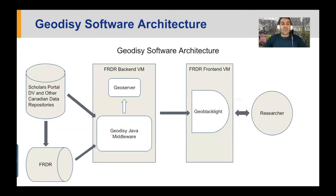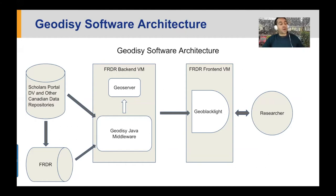In phase one, we are working with Scholars Portal databases, which have more than 60 various institutional databases for places like University of British Columbia, McGill University, University of Toronto, Waterloo, and others. We're extracting the data out of those databases and taking it into our Geodesy middleware pipeline. In the back end, we are adding value by crosswalking the metadata into a standardized format, but also adding bounding boxes which really drive Geodesy. At the end, we ship the data into our GeoBlacklight instance where it's available for researchers to use.